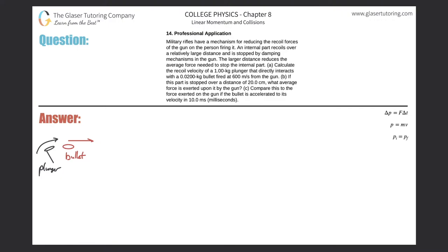Number 14, professional application. Military rifles have a mechanism for reducing the recoil forces of the gun on the person firing it. An internal part recoils over a relatively large distance, stopped by dampening mechanisms in the gun. The larger distance reduces the average force needed to stop the internal part. Letter A: calculate the recoil velocity of a one kilogram plunger that directly interacts with a 0.02 kilogram bullet fired at 600 meters per second from the gun.